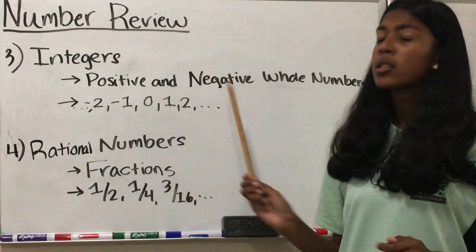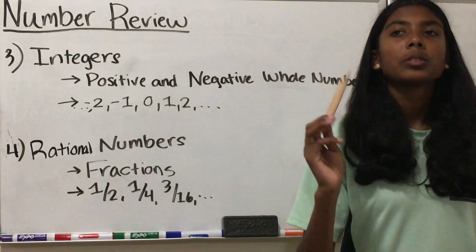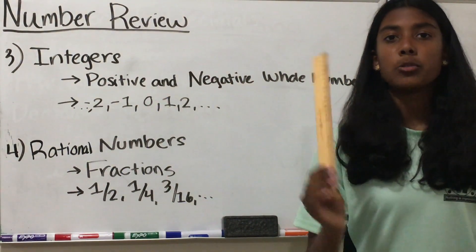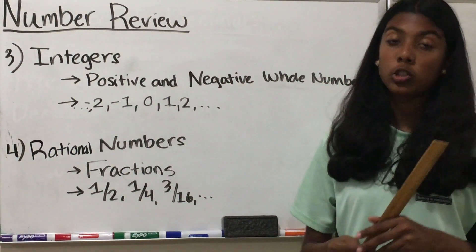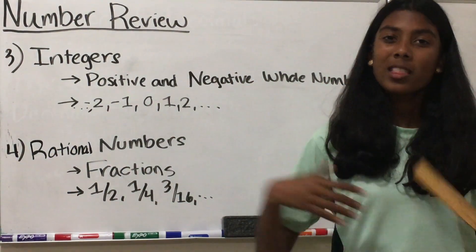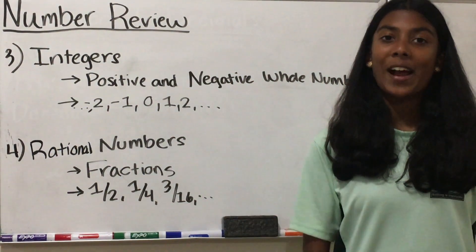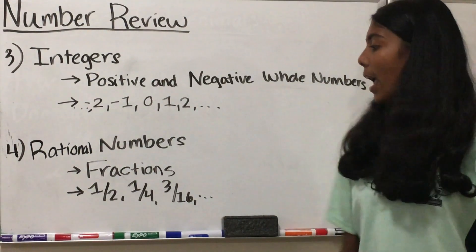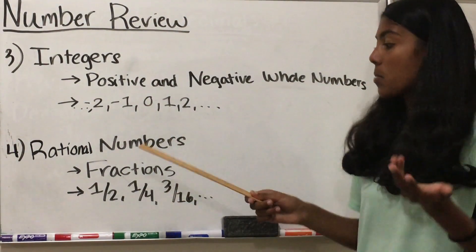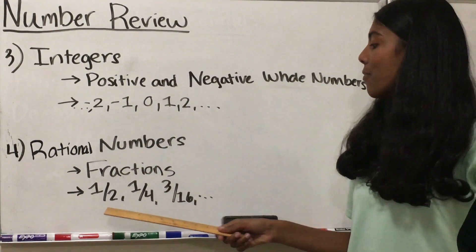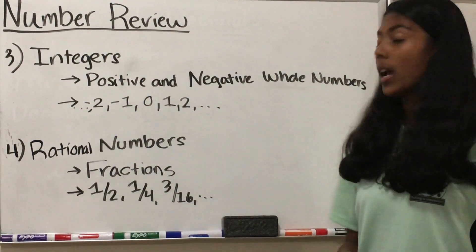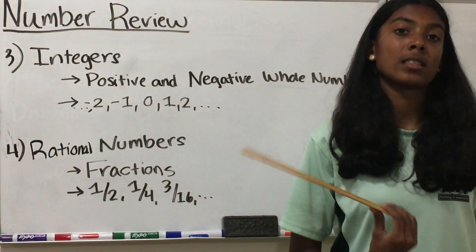Our last type of number that we're going to do today is the rational numbers. These are our fractions, and some examples are 1 half, 1 fourth, and 3 sixteenths.